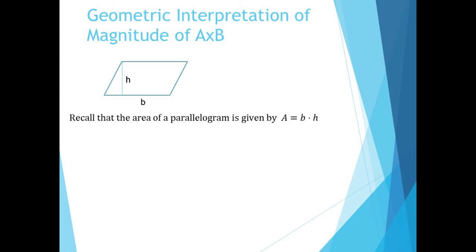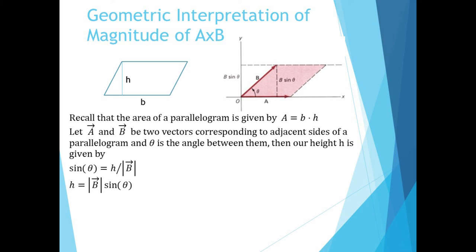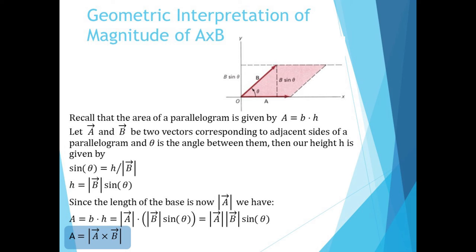This has a nice geometric interpretation. Recall that the area of a parallelogram is the base times the height. By letting our vectors a and b correspond to the two sides of a parallelogram, we can see that the height is just the magnitude of b times sine of theta, and the base is just the magnitude of a. So the area of the parallelogram is the magnitude of a times the magnitude of b times sine of theta, which is just equal to the magnitude of a cross b.